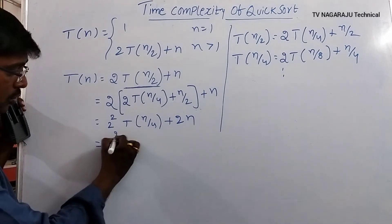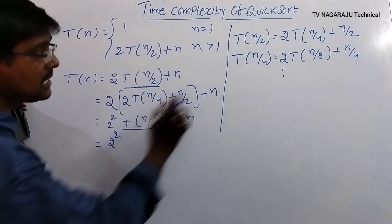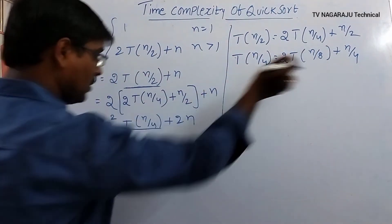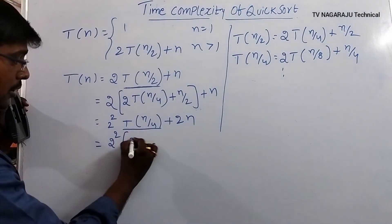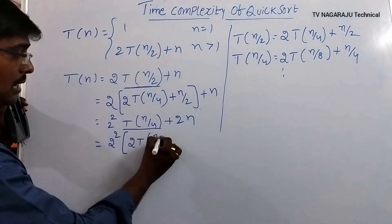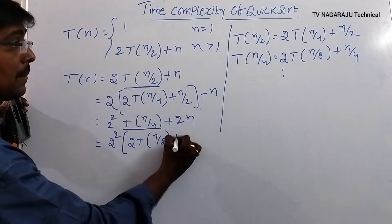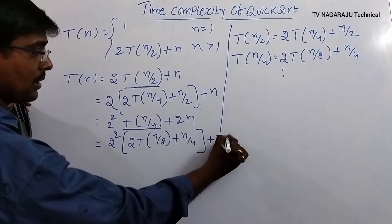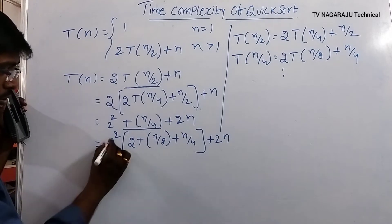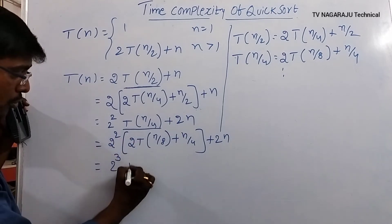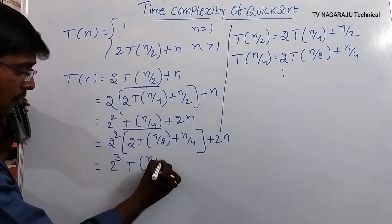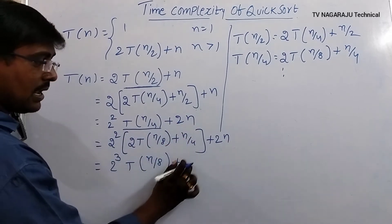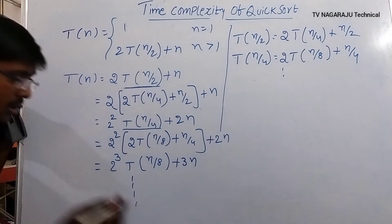Continuing the substitution pattern: T(n) = 2²·T(n/4) + 2n, then T(n) = 2³·T(n/8) + 3n. Each step the coefficient of n increases by 1.